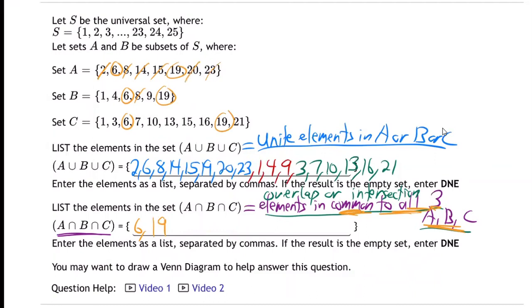I don't even need to check anything else. That makes sense? If I've checked all of A, I'm done, because it's got to be in all three, which means it would have to be in A. So if I'm done checking A, I'm done. So the only things in common to the overlap are 6 and 19. And so there we go on that one.